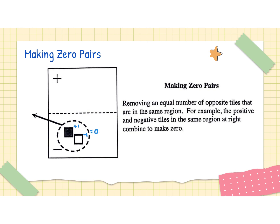What we talked about was circling them, putting a line through them, and showing them removing themselves from the actual mat. It does not matter if they are in the negative space or in the positive space — if together they add up to zero, you can go ahead and remove them. If you decide to make a key that says zero pairs you can do that; if you do not make a key, you must say over here zero pairs.